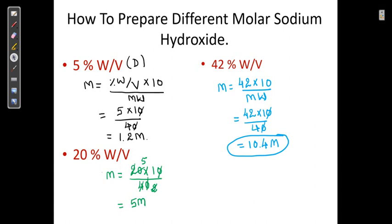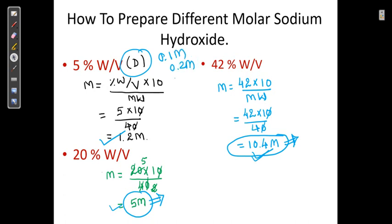To summarize: if it is written diluted NaOH solution, that is 1.2 molar. If it is simply written NaOH solution, that is 5 molar — most of the time we make the mistake of taking 1 molar or 2 molar. And the strong NaOH solution is 10.4 molar. We often think diluted NaOH means 0.1 or 0.5 molar, but it is actually 1.2 molar, and concentrated is 10.4 molar.